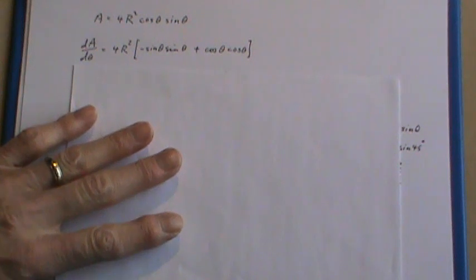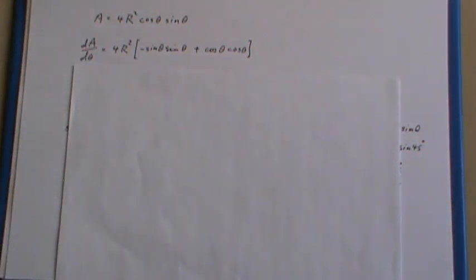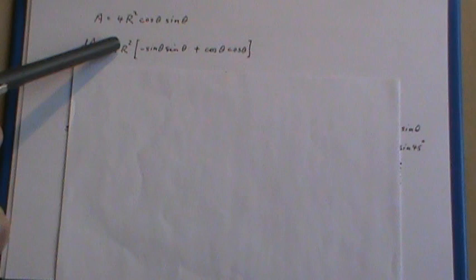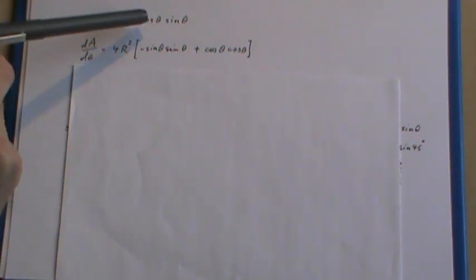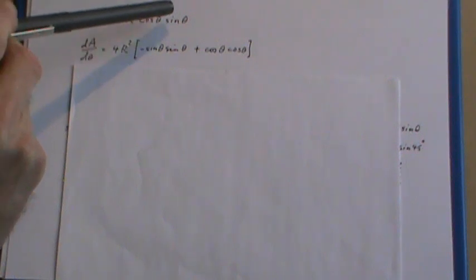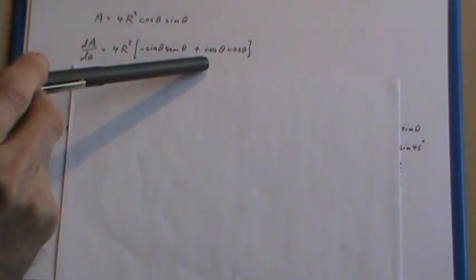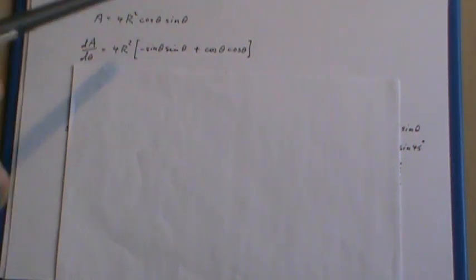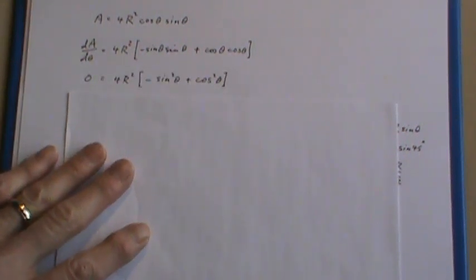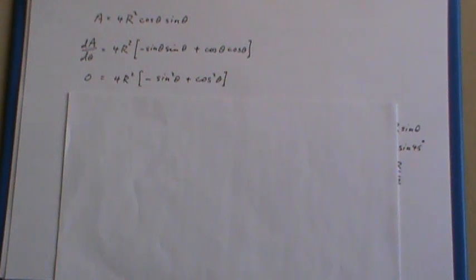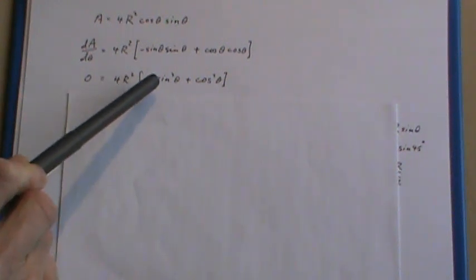I'm going to take the derivative with respect to θ and again I get into a product rule here. This is just a constant so I can factor this out in front. The derivative of cos is negative sine times the sine plus the cos times the derivative of sine which is cosine θ. Put the derivative equal to 0. Simplified, this is just sine² and that's just cos².